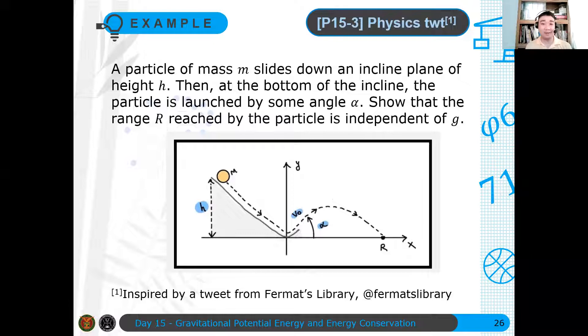So we have a particle of mass M that's sliding down an inclined plane of height H. Then at the bottom of the incline, the particle is launched by some angle alpha. So using only the energy obtained by this particle, it's launched. So it's like a cannon, then it's launched at some angle, and then it reaches some R.